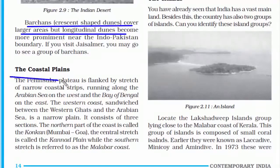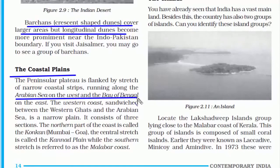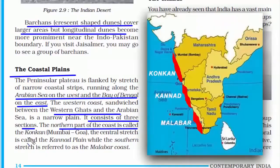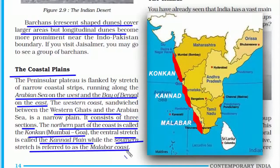The fifth feature is the coastal plains. India is a peninsula country because water lies on three sides — we have the Arabian Sea to the west and the Bay of Bengal to the east. The western coast is a narrow plain divided into three sections: the northern part is called the Konkan coast (Mumbai to Goa), the central stretch is called the Kanara plain in Karnataka, and the southern stretch is the Malabar Coast in Kerala.